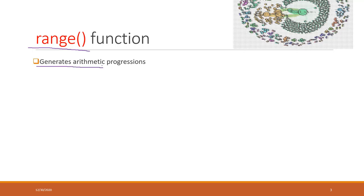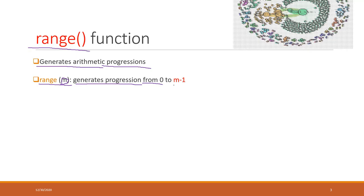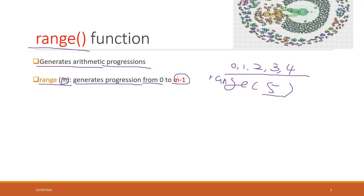Now let's look at the range function. Normally we use the range function together with the for loop. The range function will generate arithmetic progressions — a sequence of numbers. The range function can take multiple inputs. If you have just one number in the parentheses, it will generate a progression from 0 until that number minus 1. So range(5) will generate 0, 1, 2, 3, and 4 — it will not generate 5. It is always N minus 1.